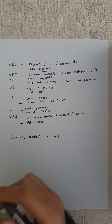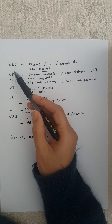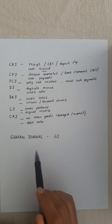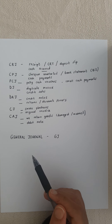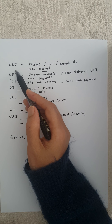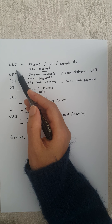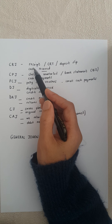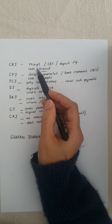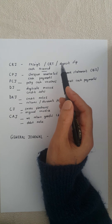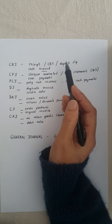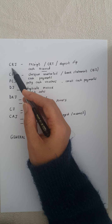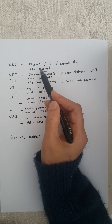Assalamu alaikum, great learners. Today we're doing a revision of all the types of journals we've done and understanding why we have them. We have a cash receipts journal where we record all the cash that has been received. The source documents we use are a receipt, a cash register tape, or a deposit slip. Every time we receive money into our business we put it into the cash receipts journal.